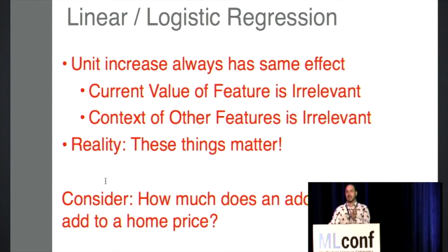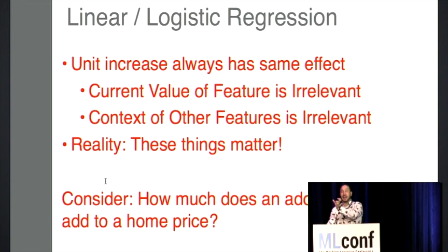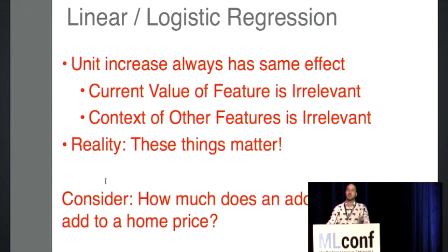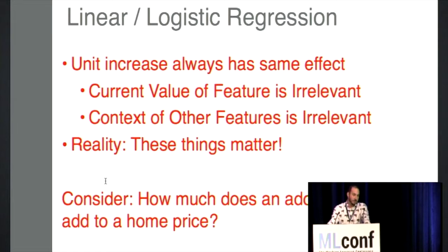In linear and logistic regression, a unit increase always has the same effect — the current value of your feature is irrelevant. For example, how much does an additional 100 square feet add to a home price? A regression model says whether you're going from 600 to 700 square feet or from 5,000 to 5,100 square feet, that delta in home price is the same regardless. Furthermore, it's going to be independent of all other aspects — whether it's a teardown or a really nice house. In reality, those other features matter a lot.